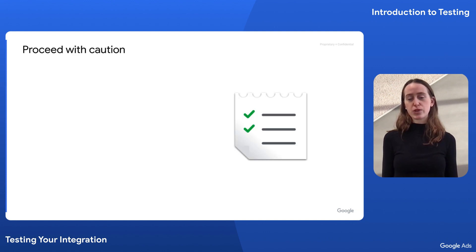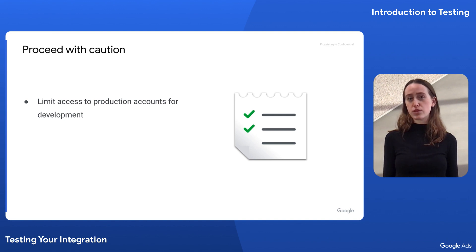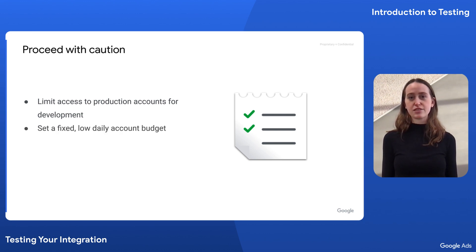Because production accounts have real-world impact, exercise caution when using them for testing and development. We recommend that you limit access to these accounts to only those users that need them for testing purposes, and set a fixed, low daily account budget. Finally, only use production accounts for development as a last resort when test accounts can't be used. Stay tuned for our next episode, where I'll show you how to set up and use test accounts in practice. If you found this video helpful, be sure to give it a like and subscribe to our channel for future videos. Thanks for watching.